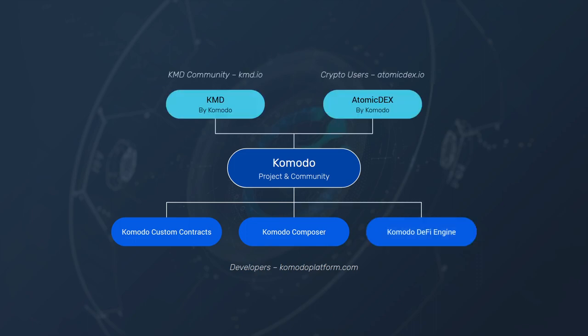Then we have a couple of others: KMD and Atomic Dex. These two would be more of an endorsed product brand, meaning they could have a unique brand with their own colors and feel, and they would exist on a separate domain. We would clearly indicate that this is by Komodo. Again, Komodo is a community project — as a community we created the coin KMD, we created Atomic Dex as the reference app, and we created these developer-facing solutions and products.